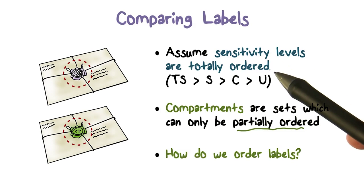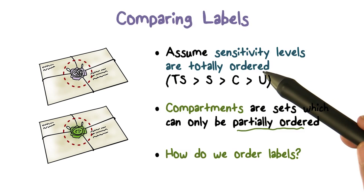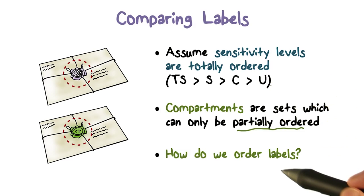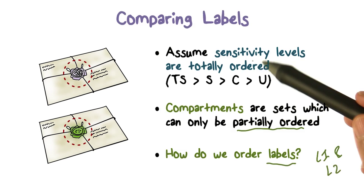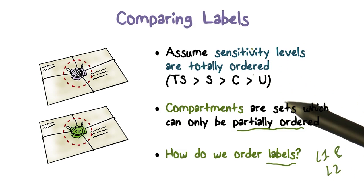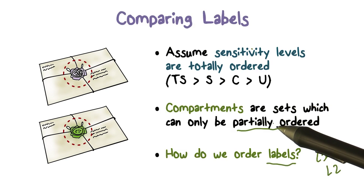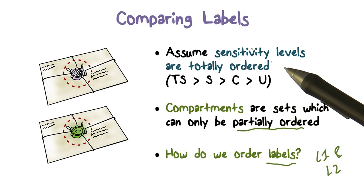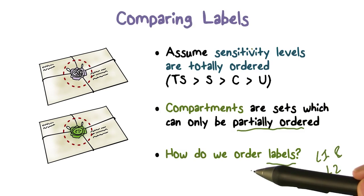When we talk about ordering labels, we have to look into the label. We have to look at the sensitivity level of the labels we're comparing, L1 and L2. Then we look at L1's sensitivity level and L2's sensitivity level and how they compare. Then we look at the compartment of each and compare those compartments. By comparing both parts, we can decide how to order the labels.